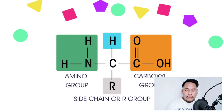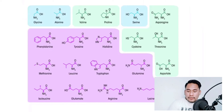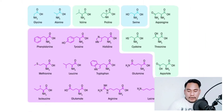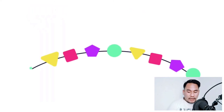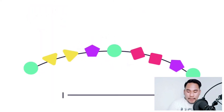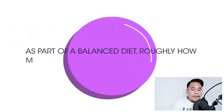All of the different proteins are made from these 20 different amino acids. The variety of proteins is caused by the order of the amino acids, the chain length, and by folding the chain in distinct ways.